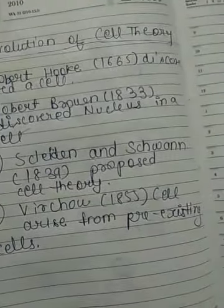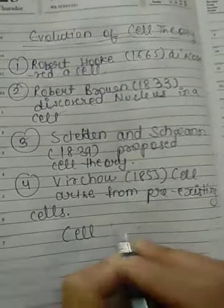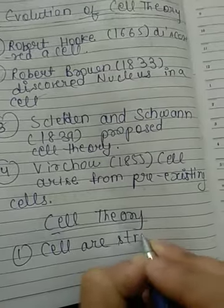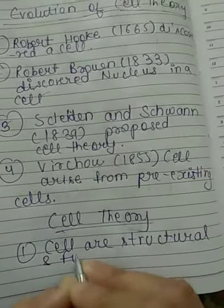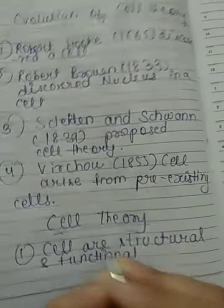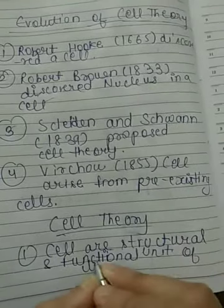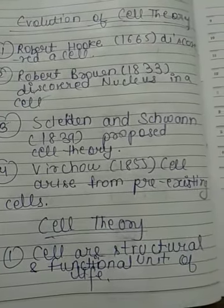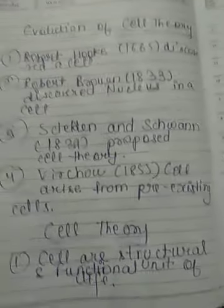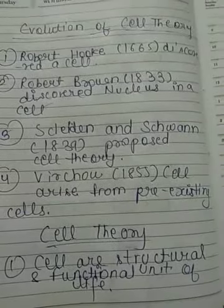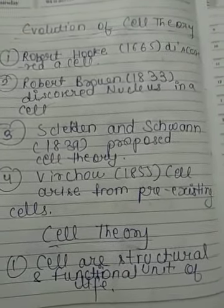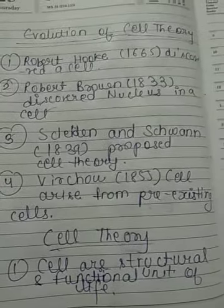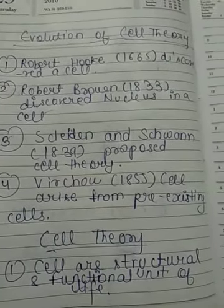So what exactly is the cell theory? The first point is that cells are the structural and functional unit of life. As per microscopic tests, it was found that the entire body of an organism is made up of small compartments called cells, making it a structural unit. It was also later found that the functions performed in a living organism's body have their basis in the cell, making it a functional unit as well.